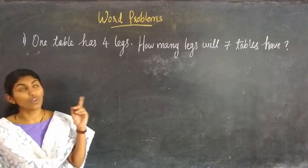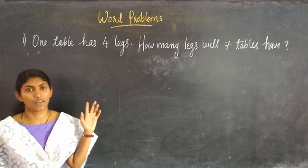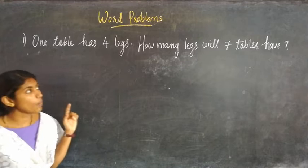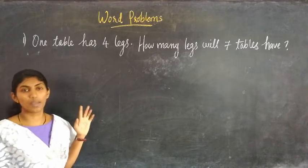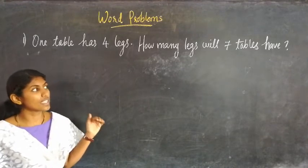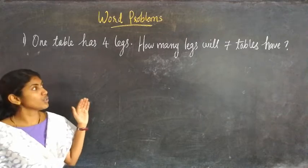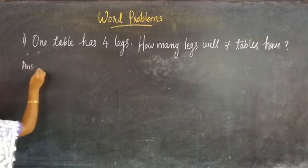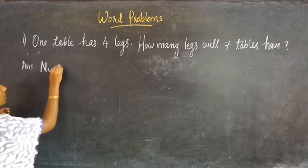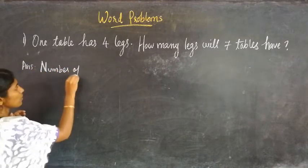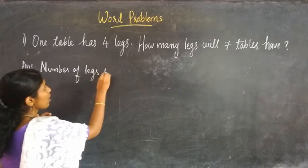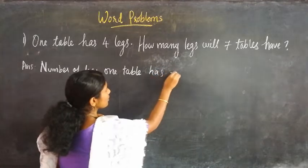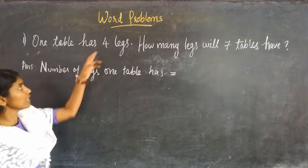Now children we are moving to word problems related to multiplication. First question: one table has 4 legs. How many legs will 7 tables have? We have to find how many legs 7 tables have. To write the word problem answer, we follow steps. Step: number of legs one table has — how many legs does one table have? Yes, 4.